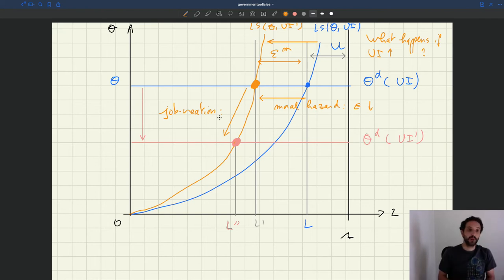Which says that, so basically it says that job creation drops, vacancies fall when UI goes up. And here it's caused because this drop in job creation arises because the wages have gone up. So now we have this extra channel. So you remember in the first model we saw with job rationing, tightness would go up when UI would go up. Here it's the opposite.